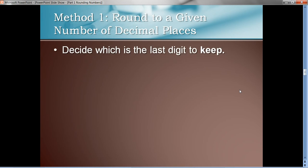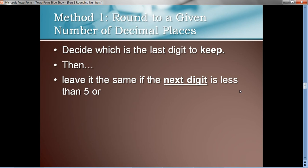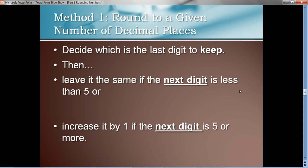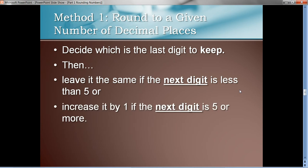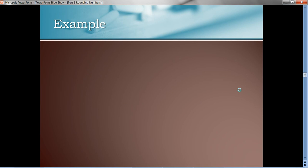And there's two scenarios here. And the first one is on rounding to a given number of decimal places. First, we want to decide which is the last digit we want to keep, whether it be four decimal places, two decimal places, one decimal place, that kind of thing. Then, leave it the same if the next digit to the right is less than five, or if the digit to the right, the next digit, is five or more, increase that digit by one.